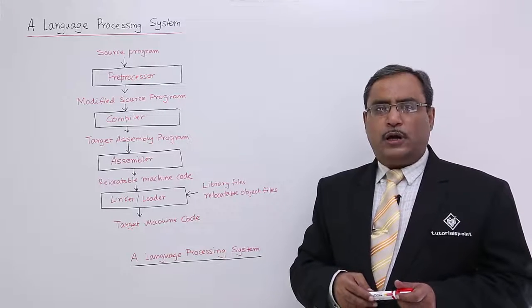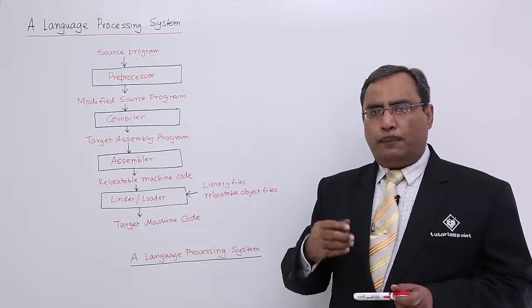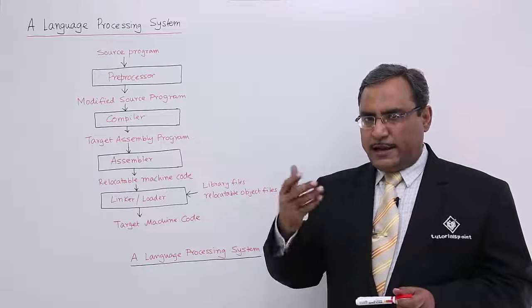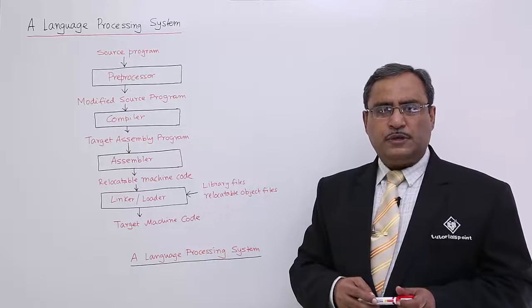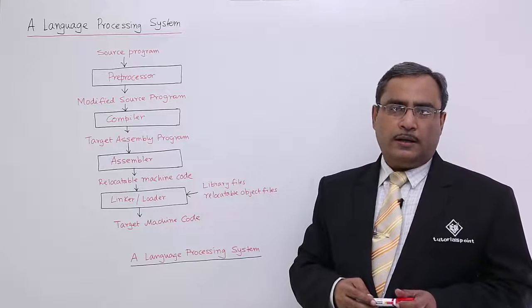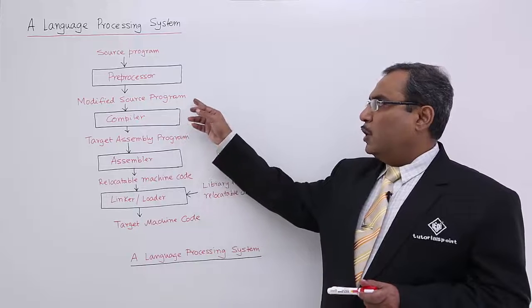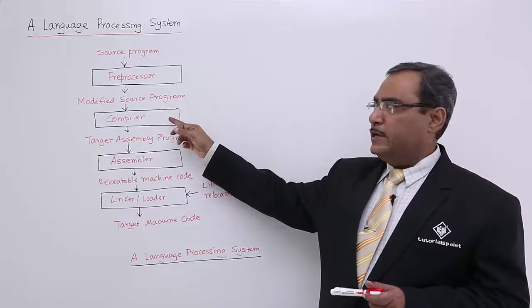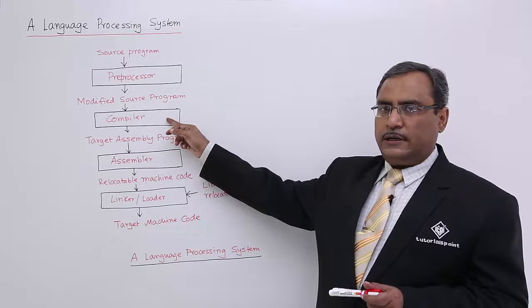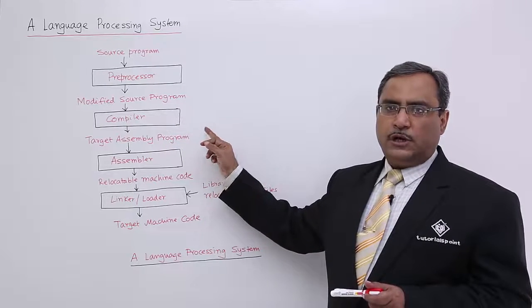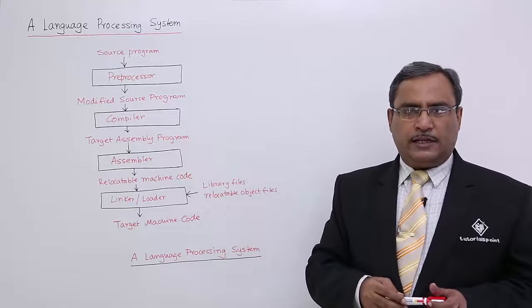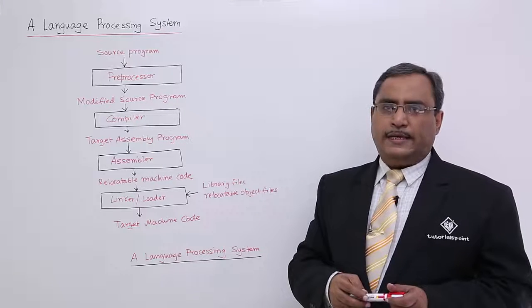Because assembly language programs are easy to compile or easy to translate later on to the respective target language, and assembly language programs are very easy to debug. So, this modified source program will be taken as input by the compiler, by this particular translator, and which will produce the output program in some target language known as the assembly language. And the respective program will be known as the assembly language program.